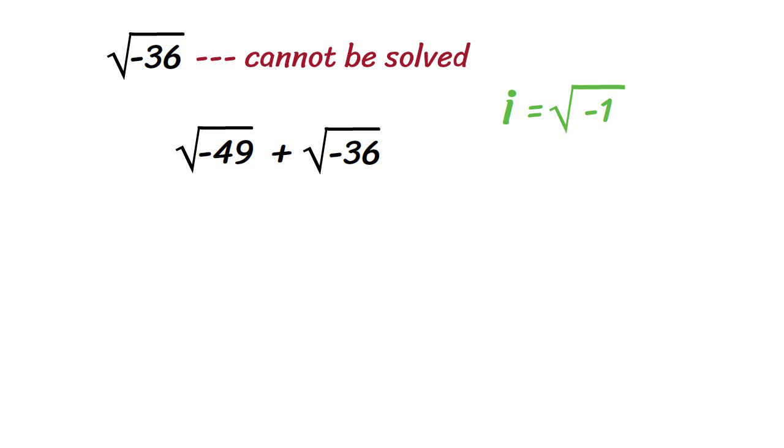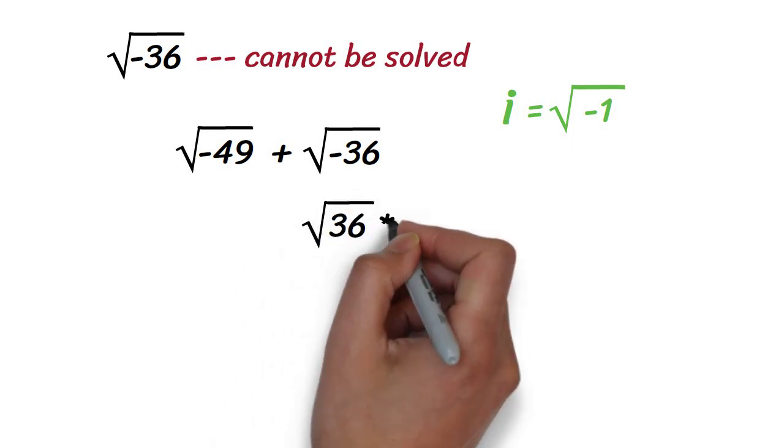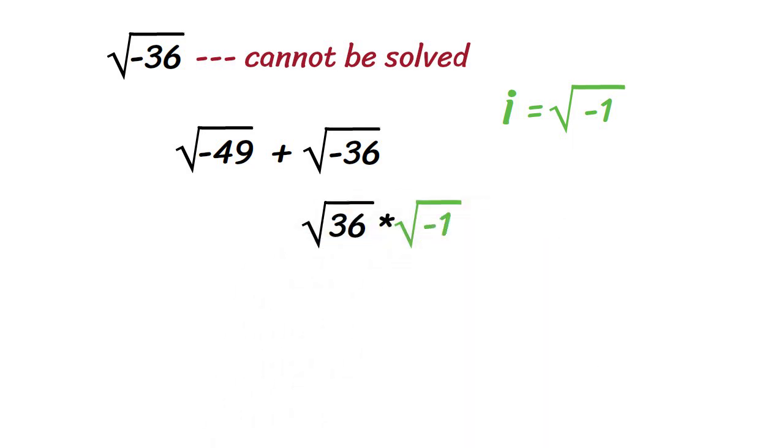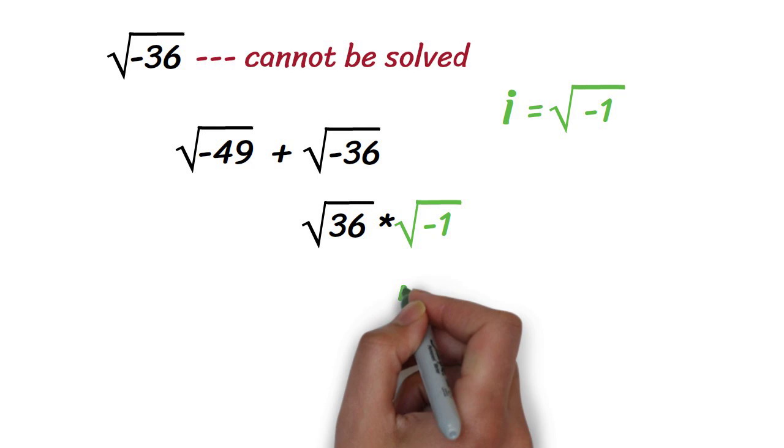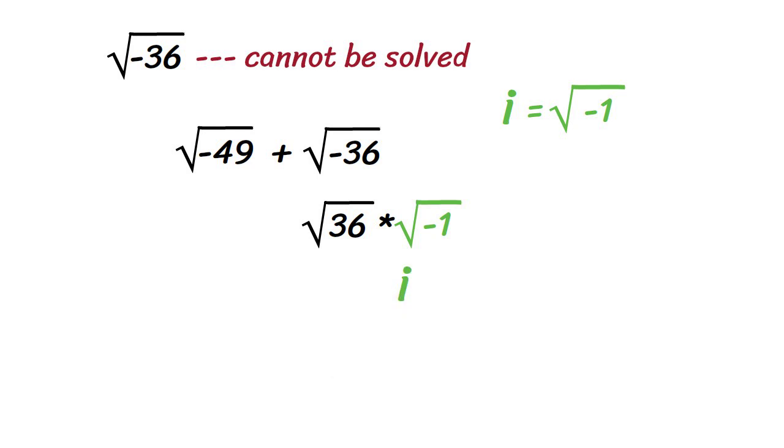We can break square root of negative 36 into square root of 36 times square root of negative 1, because 36 times negative 1 is negative 36. Then we can call this part i because the square root of negative 1 is i. We can then find the square root of 36, which is 6. So square root of negative 36 is 6i.